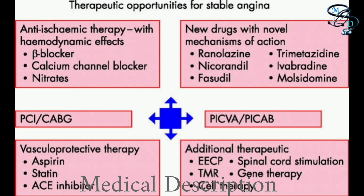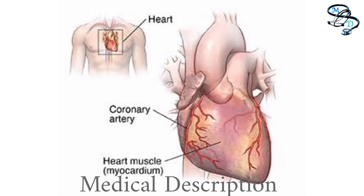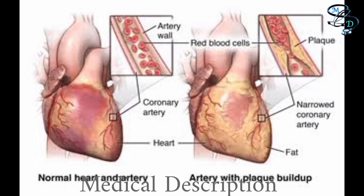...the beta-adrenergic blocking agent propranolol should be tried before coronary artery surgery is considered. Newer beta-adrenergic blocking agents do not appear to be more effective than propranolol. Digitalis may be beneficial in patients with congestive heart failure, cardiac arrhythmias responsive to digitalis, radiographic evidence of left ventricular enlargement, or nocturnal angina resulting from increased left ventricular end-diastolic volume.